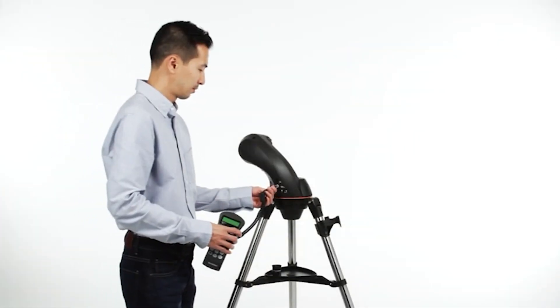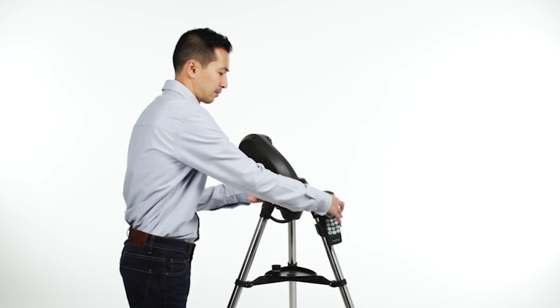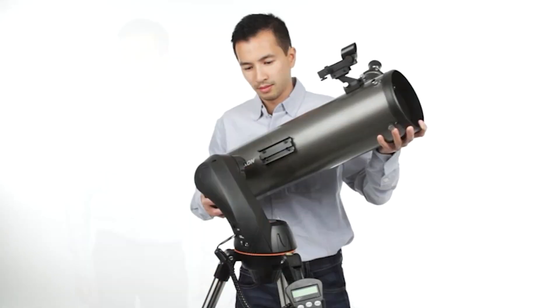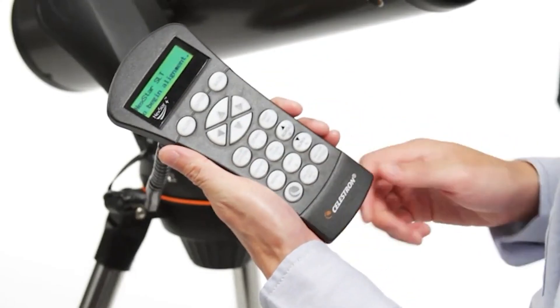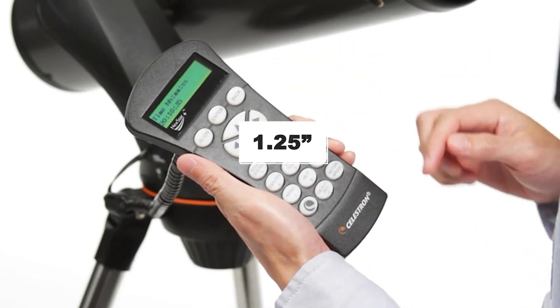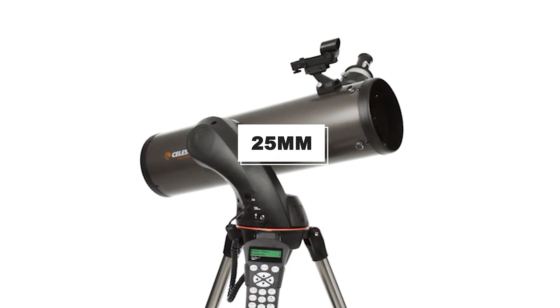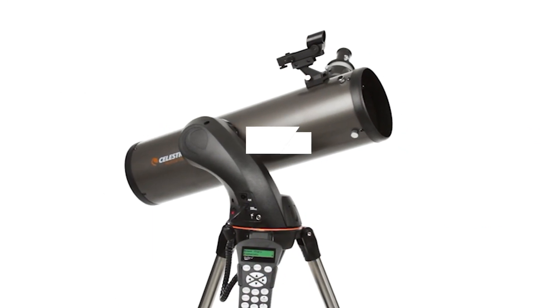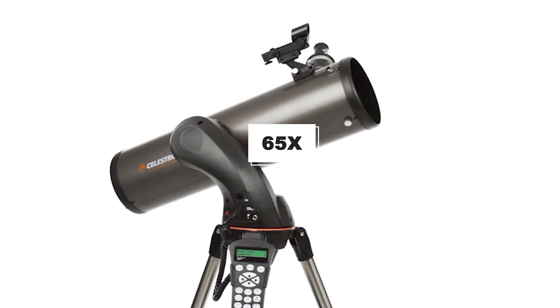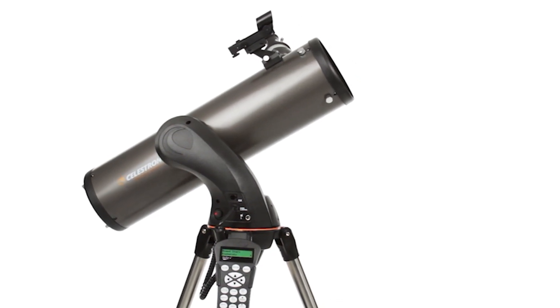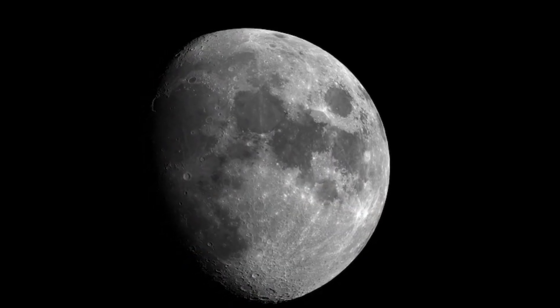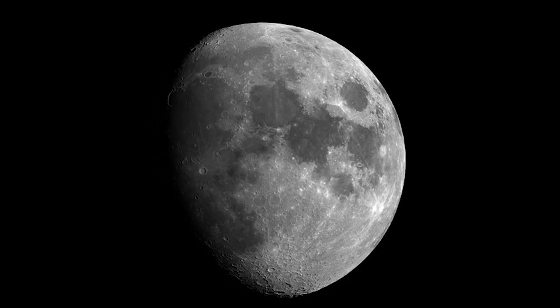You'll get clear, bright views of objects even at high magnification. The included eyepieces are adequate and upgrades are available if you want to dig deeper into the cosmos. The 130SLT includes two 1.25-inch Kellner eyepieces, a 25mm for 26x magnification, and a 10mm for 65x. These are enough to get you started, but you'll want additional eyepieces for more magnification options, particularly for viewing fine detail on the moon and planets or splitting double stars.